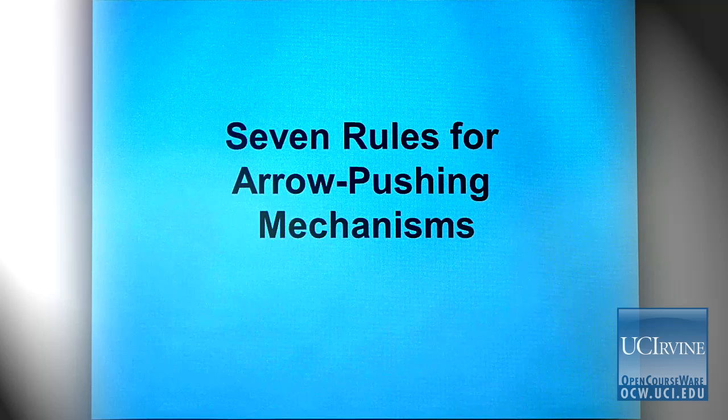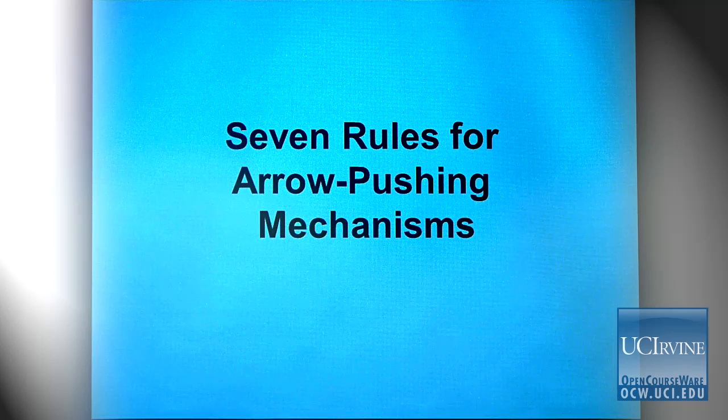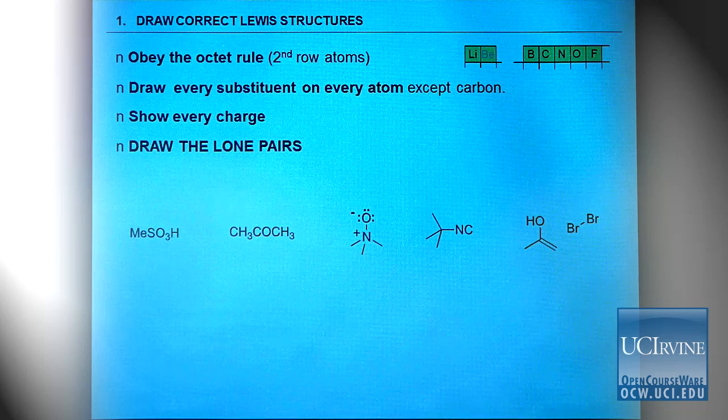Now I want to give you seven basic rules for arrow pushing mechanisms. We have one central canon—that arrow pushing represents the interaction of filled orbitals with unfilled orbitals—but we need guidelines for how to apply that. We'll break this down into seven independent rules to ensure we're using arrow pushing in the most effective way possible without misleading ourselves.